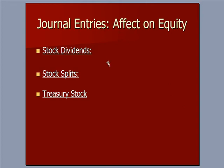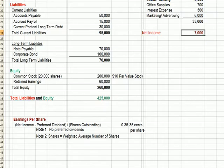We talked in the previous video, number 19, about stock dividends, splits, and treasury stock, and calculating weighted average common stock shares outstanding. What I want to talk about this time is the journal entries that happen with these transactions and what the impact is on the equity part of the balance sheet.